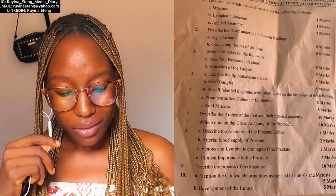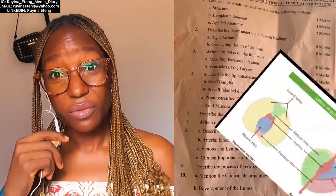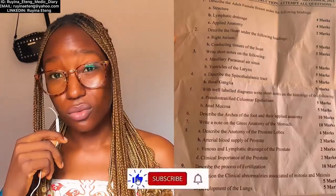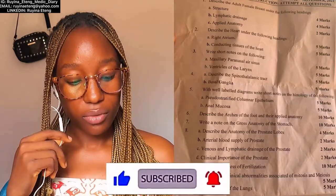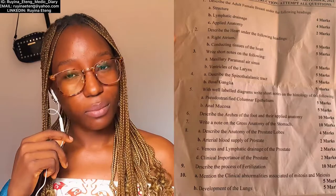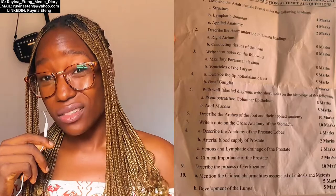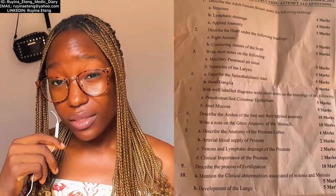Then describe the anatomy of the lobes of the prostate. This question is straightforward because they have told you what they expect. Write the different lobes, draw a diagram if you can, and describe the structure of the lobes. Use the headings they've already provided — no need to create your own. Include arterial blood supply with diagrams if possible. For venous and lymphatic drainage, write them as two separate headings with separate diagrams. Then write clinical anatomy as its own heading.